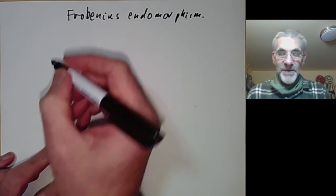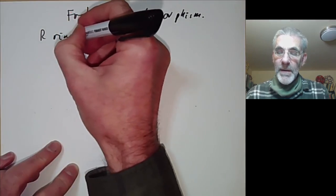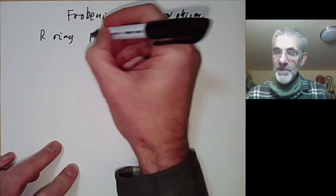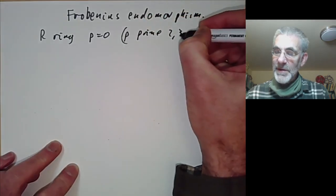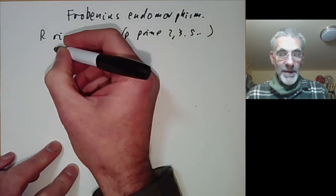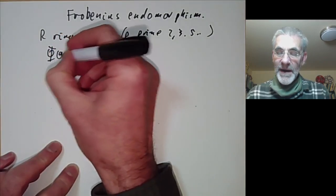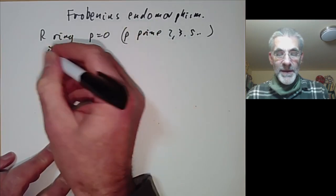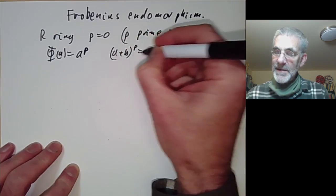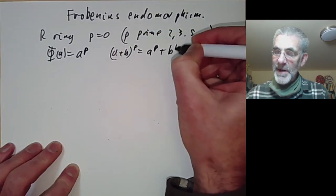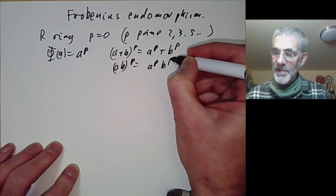First, we look at the case of finite fields. Suppose R is a ring of characteristic P — in other words, P equals zero where P is some prime, 2, 3, 5, or whatever. Then we know that in this ring, if we define phi to be a to the P, this is actually an endomorphism of the ring, because (a+b)^P = a^P + b^P, and (ab)^P = a^P · b^P.